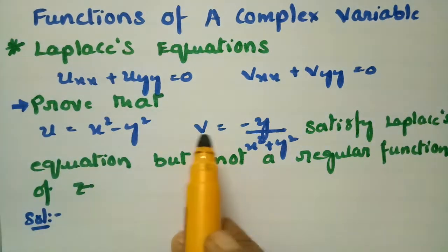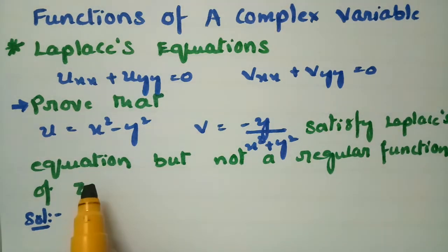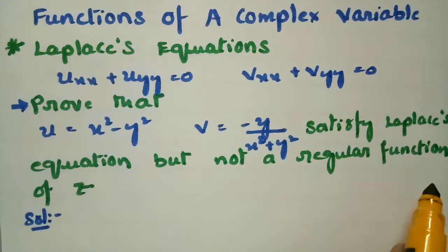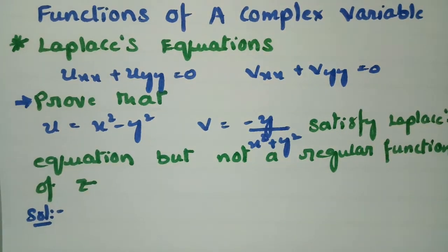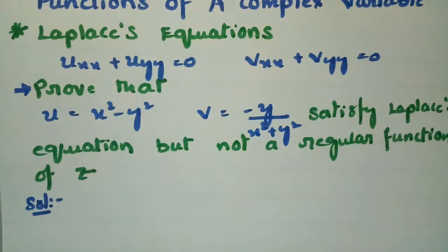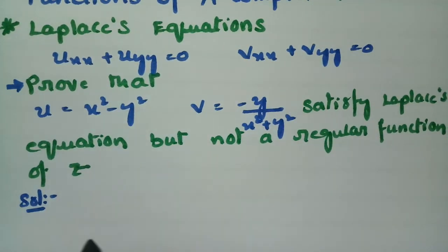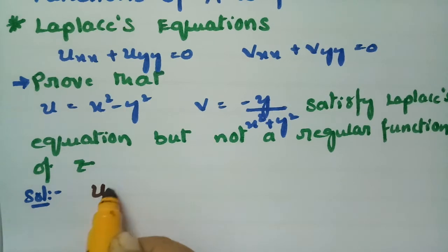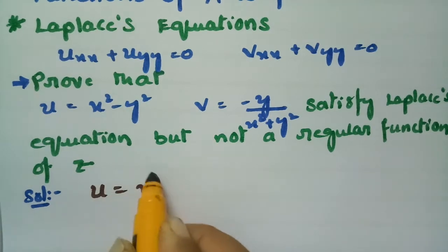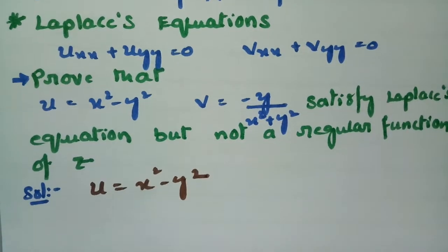We have to prove that u and v satisfy Laplace equations, but f(z) is not a regular function. So f(z) = u + iv is not a regular function. What is given here? u is given as x² - y².